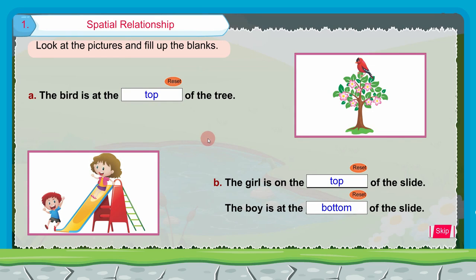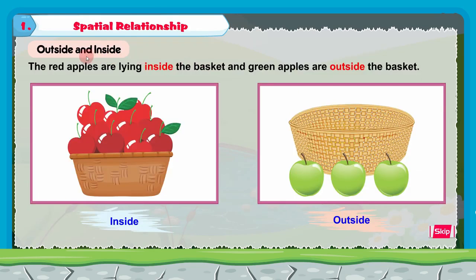This is about top and bottom, children. I hope you understood. The next topic in our first chapter, spatial relationship, is outside and inside — O-U-T-S-I-D-E outside and I-N-S-I-D-E inside.